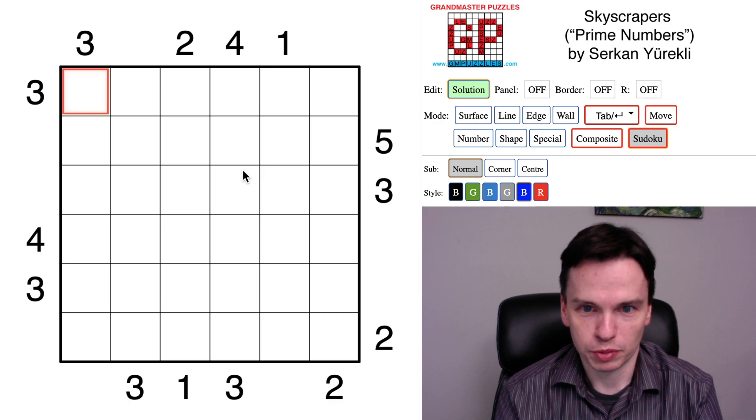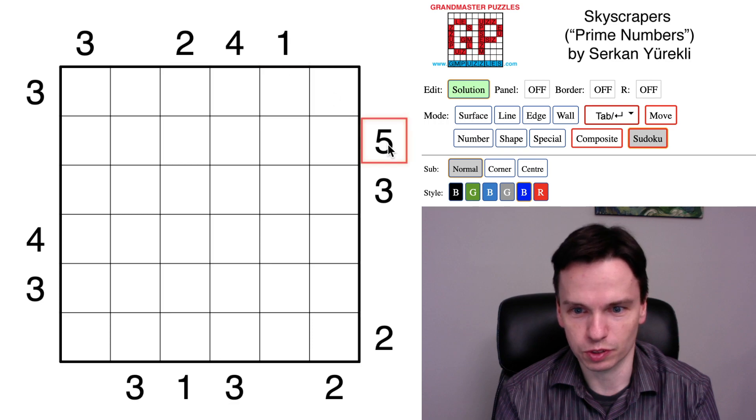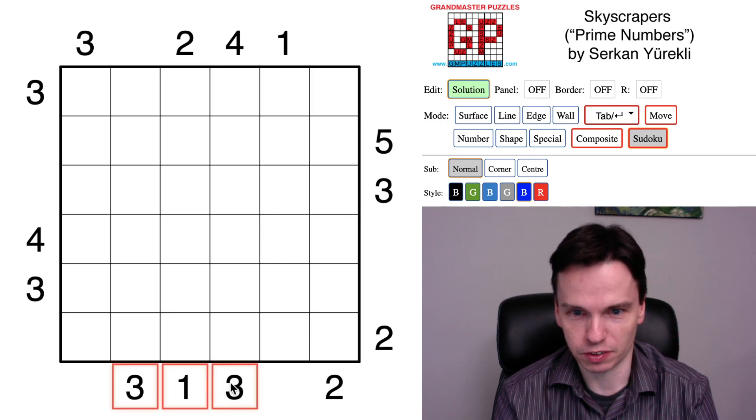So we're here to solve this skyscrapers puzzle called Prime Numbers. These are larger digits 241, 53, 313, etc. are prime numbers.